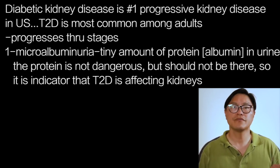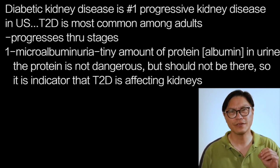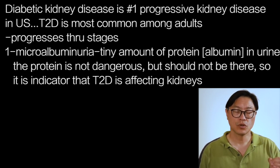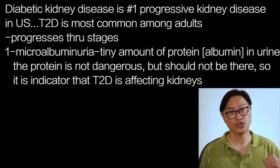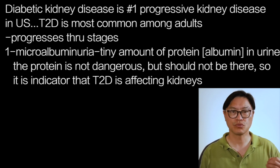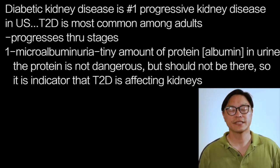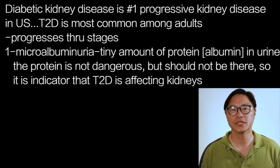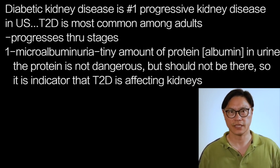First, you develop a stage called microalbuminuria. This is a stage where there are very, very minute quantities of protein — mostly albumin — that can be detected in the urine. The protein itself is not dangerous to the kidney, but it's not supposed to be there, and it's usually one of the first indications that the diabetes is starting to affect the kidneys.